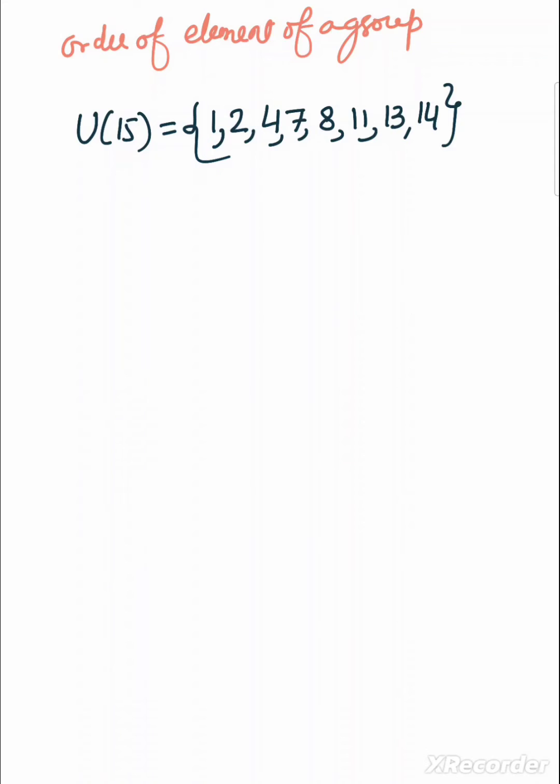U_n is a group under multiplication modulo n. Now we want to find order of each element of this group. We can find this easily. We take some examples, some elements.